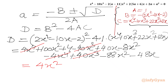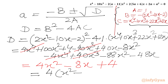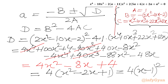Now cancelling terms: 4x⁴ minus 4x⁴ cancel, minus 40x³ plus 40x³ cancel. We get 100x² minus 96x² = 4x², then 40x minus 48x = minus 8x, plus 4 remains. Taking 4 common: 4(x² minus 2x + 1), which is 4(x minus 1)². So D = 4(x minus 1)².